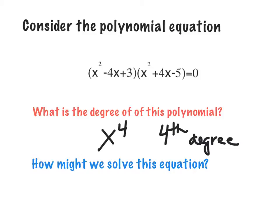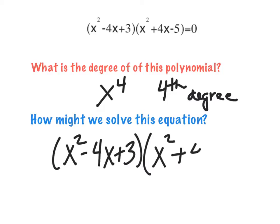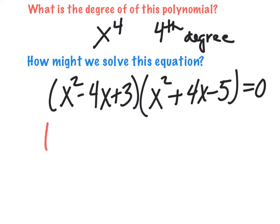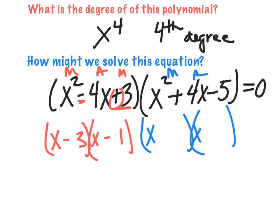How might we solve this equation? The first thing that jumps in my head is I see quadratics, and I'm going to think of factoring first. Let's rewrite our equation and try to factor these two terms. They're already being multiplied, so I'll use the multiply-add-multiply method. I need to multiply to 3, which is 3 and 1, and add to negative 4 — so both signs have to be negative. That factors really nicely.